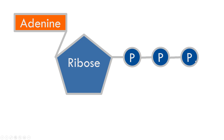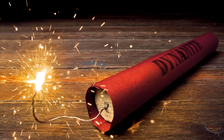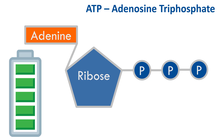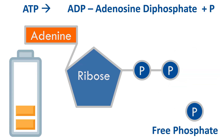Think of ATP as a fully charged battery — highly unstable, like TNT or dynamite. At some point, a phosphate molecule is released (not consumed, but liberated) from the ATP complex, going from ATP to ADP. That release gives off an energy explosion that powers cellular function. You're left with a discharged ADP molecule and a free phosphate — though ADP still retains some energy, unlike a completely dead battery.